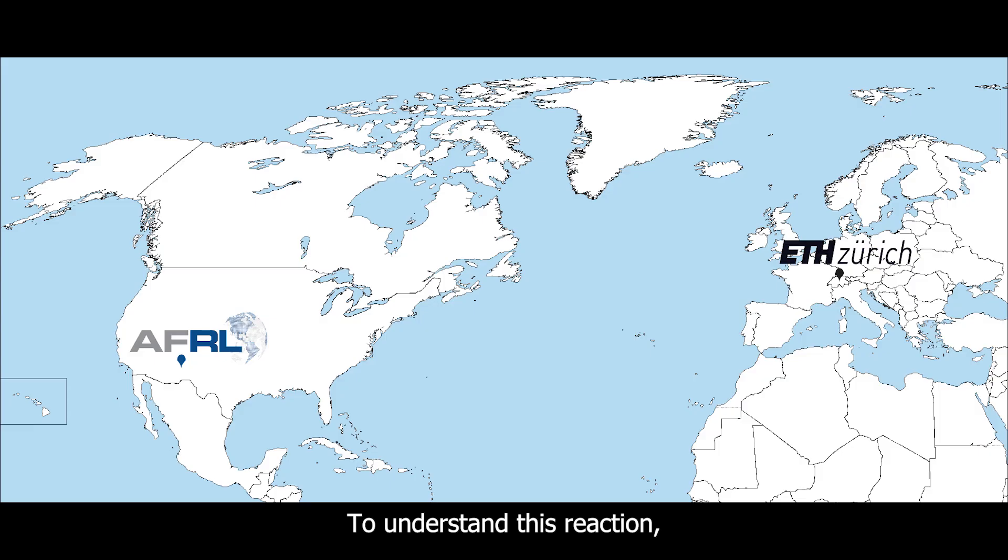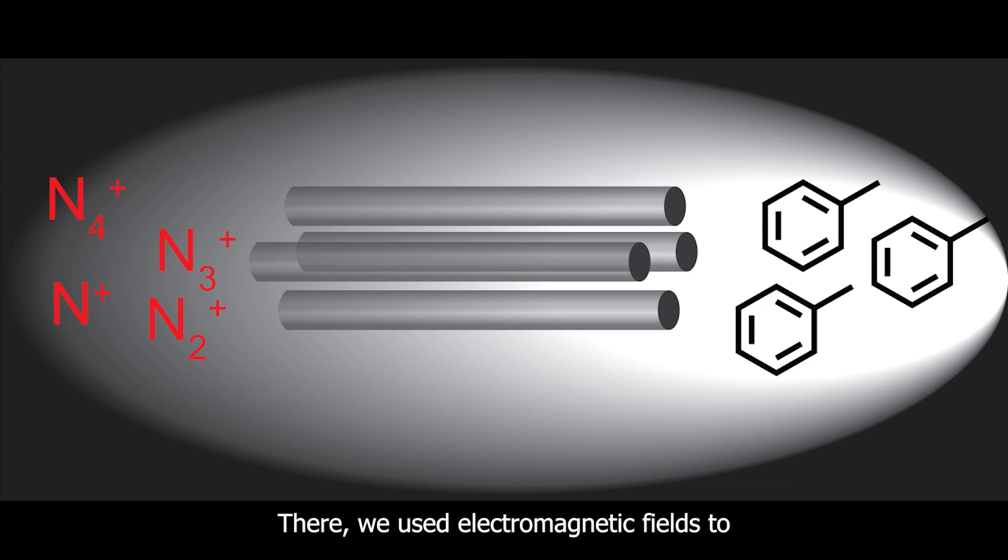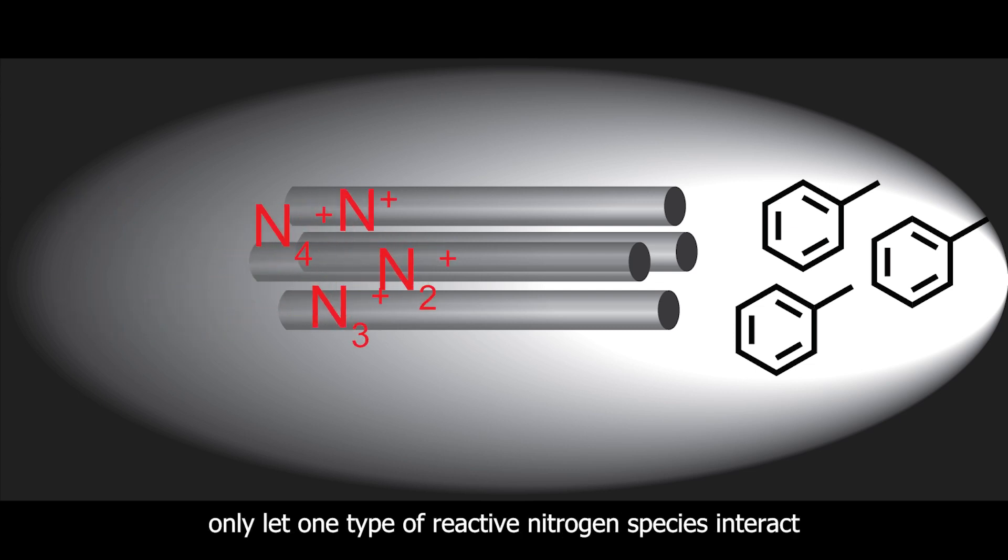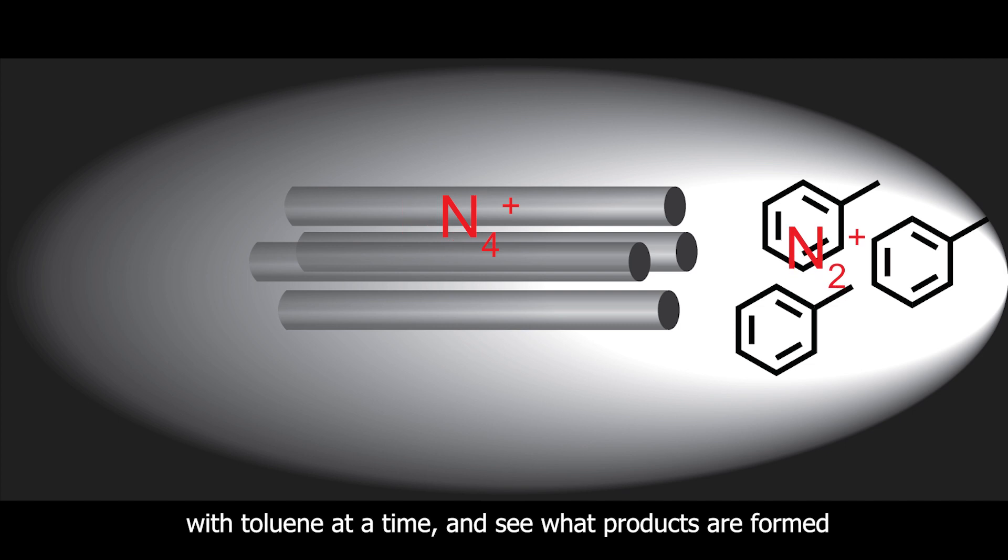To understand this reaction, I went to the plasma chemistry group at the Aeroforce Research Labs. We used electromagnetic fields to only let one type of reactive nitrogen species interact with toluene at a time and see what products are formed.